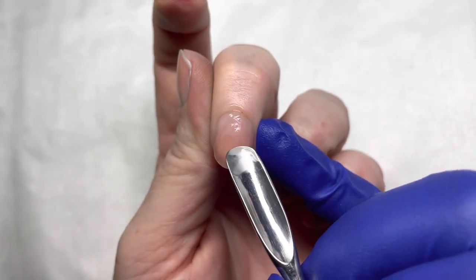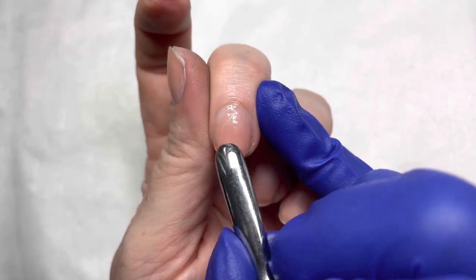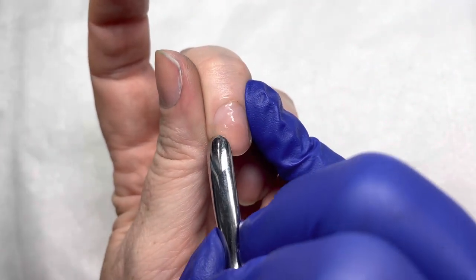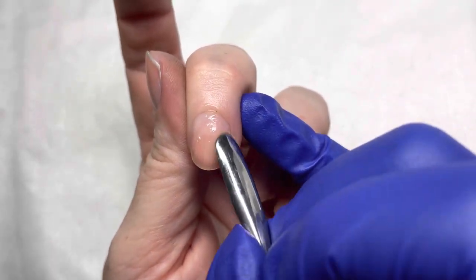Once you've applied that cuticle remover to all 10 nails, if it's the first time application you would start your pusher at the end of the nail and work your way back.